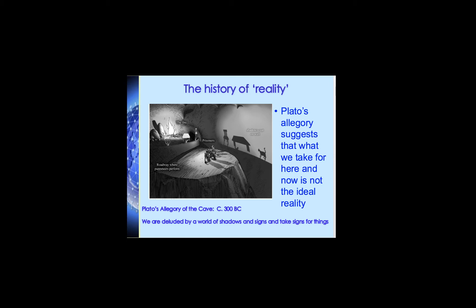Plato came up with this allegory around 300 BC. In it, people are like prisoners chained together in a cave, looking at a wall. Behind them is a fire, and they have been there all of their lives. Behind them and outside the cave there are puppeteers who perform, so the light catches the shadows of the actual external world and casts them — almost like an early movie theater — upon the walls of the cave. These prisoners, who don't really know they're imprisoned, watch this all the time and settle for these images on the cave wall as if they are reality.